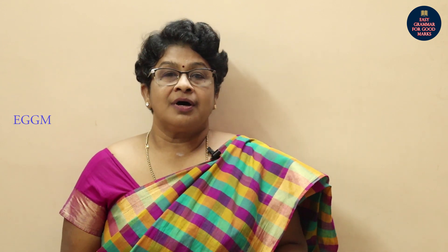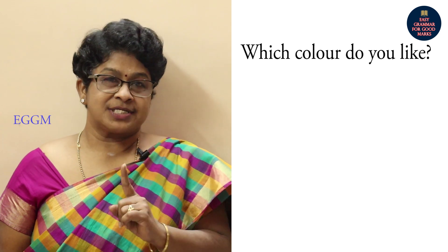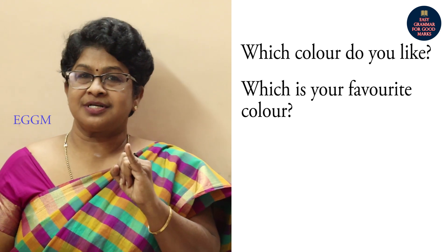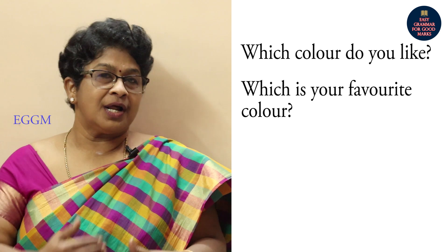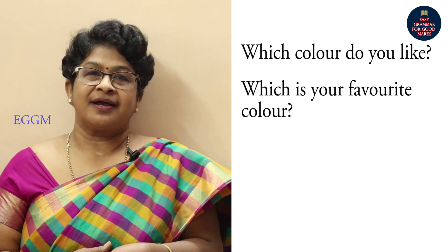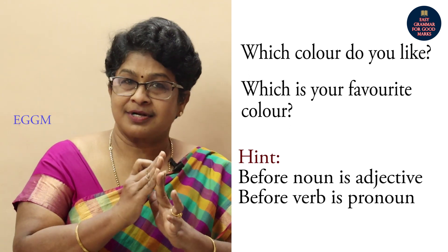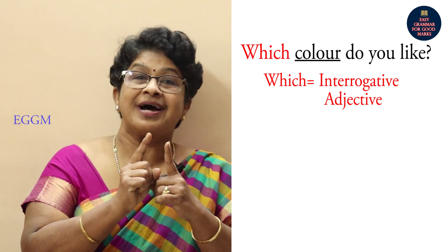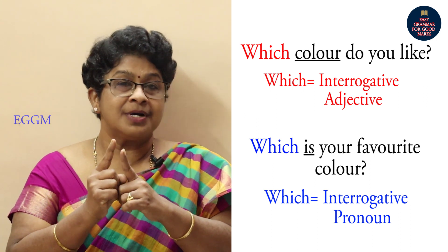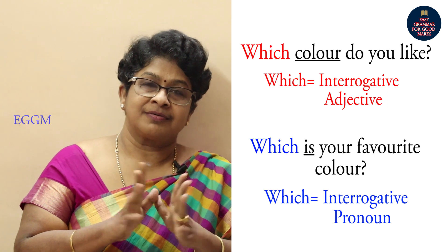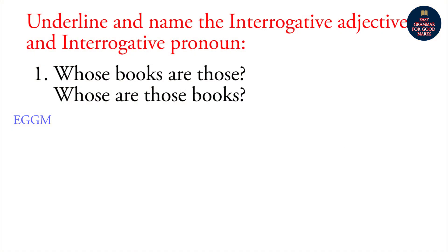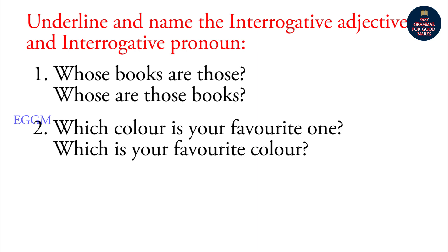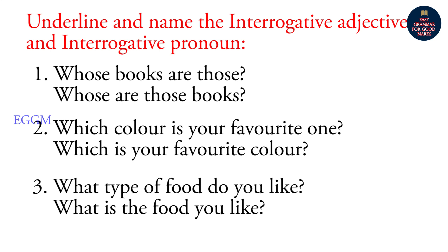Look at these sentences: 'Which color do you like?' and 'Which is your favorite color?' Now underline what is an adjective and what is a pronoun. Also: 'Whose books are those?' versus 'Whose are those books?' and 'What type of food do you like?' versus 'What is the food you like?'